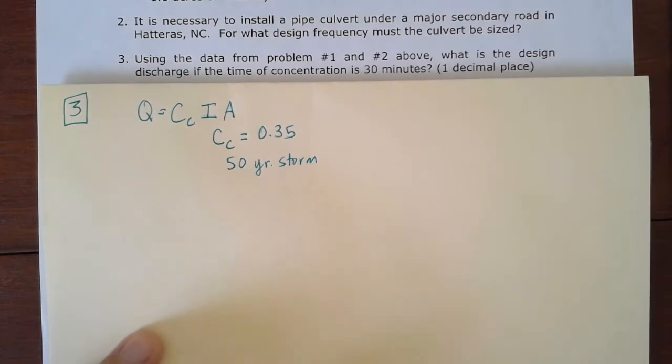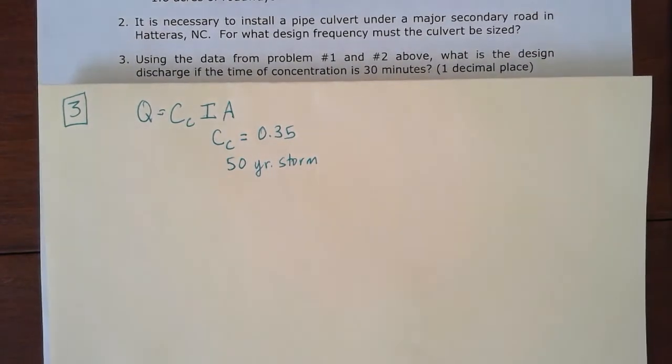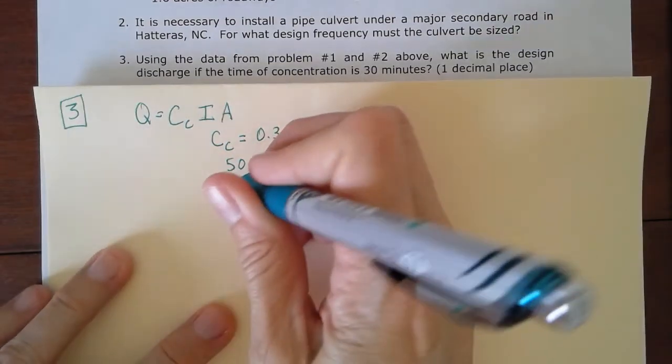So with that information, we can find, well, we just need the 50-year storm to find the I. We're told that the time of concentration is 30 minutes.